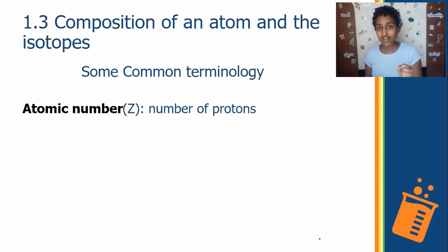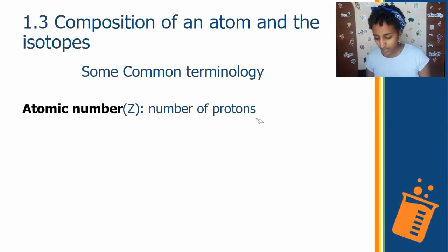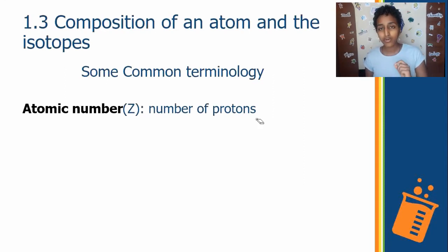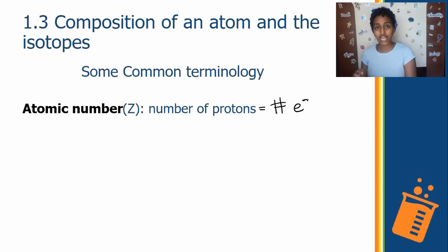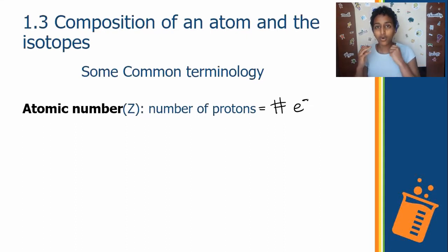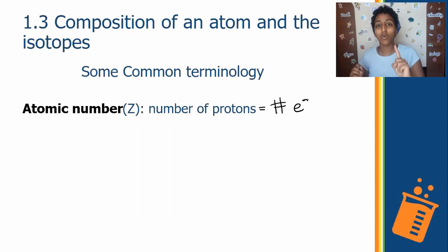If the atom is stable — I'll explain what stable means in a bit — the number of protons is usually the same as the number of electrons, written as e⁻. This holds only if the atom is stable, or neutral.